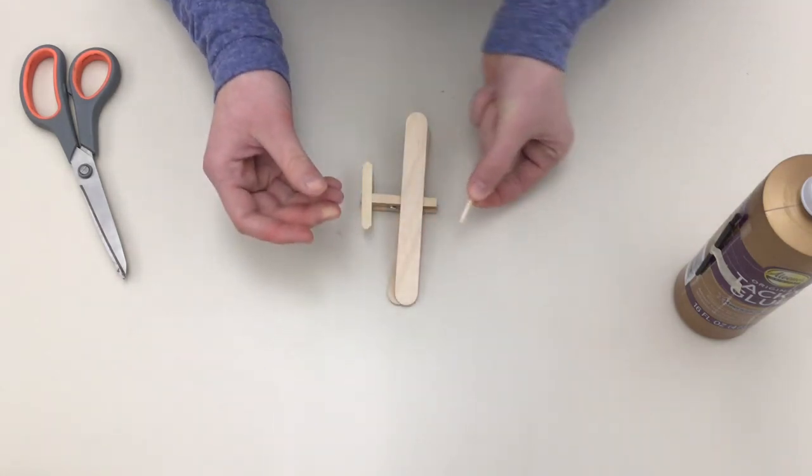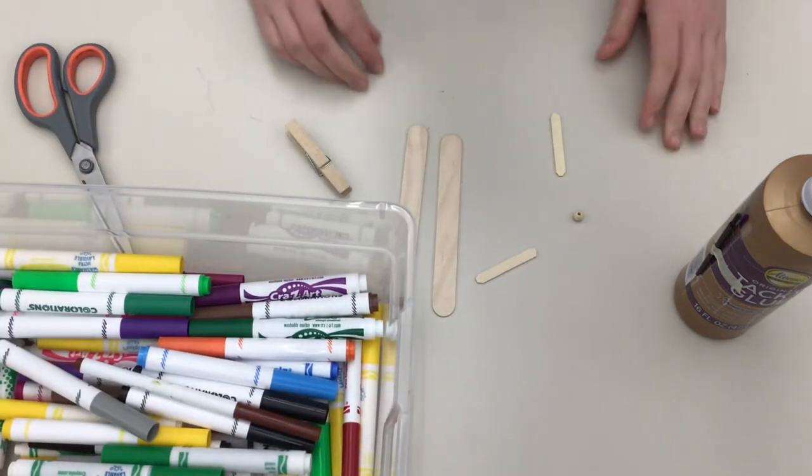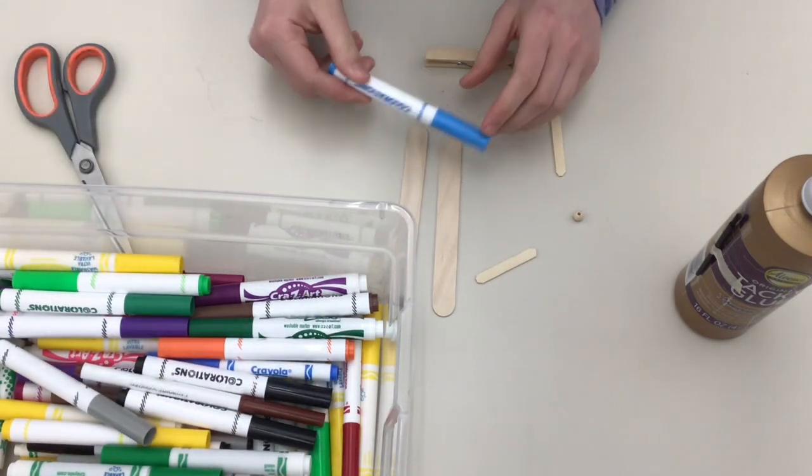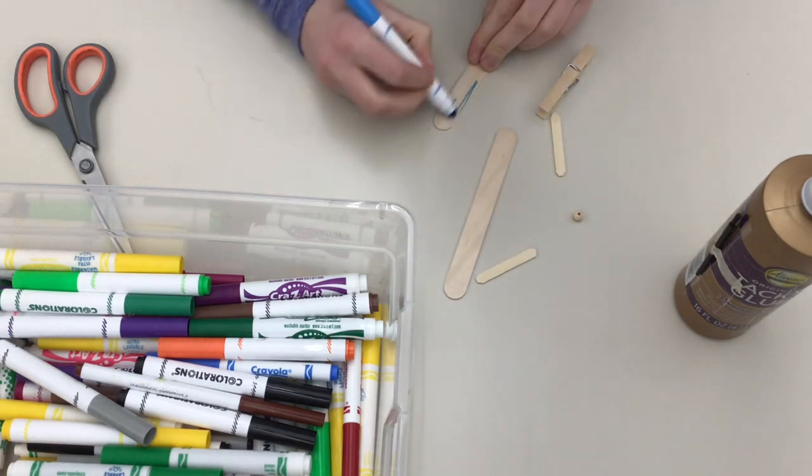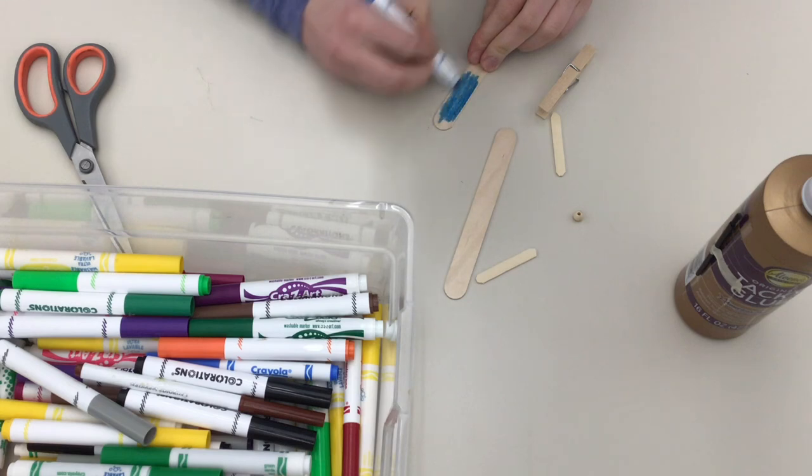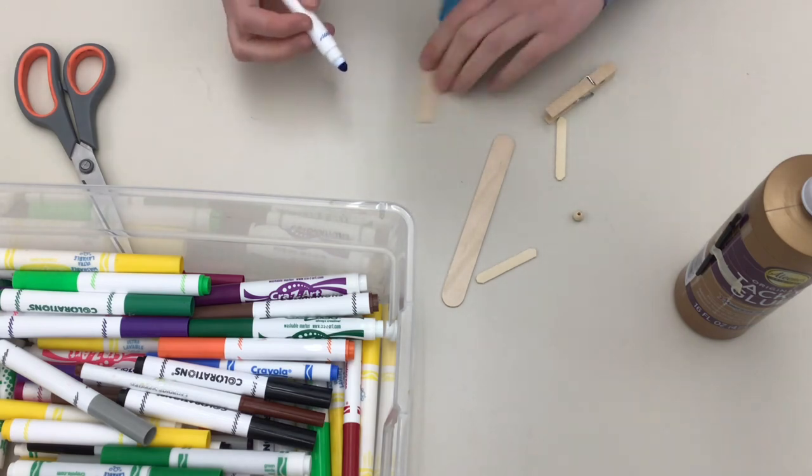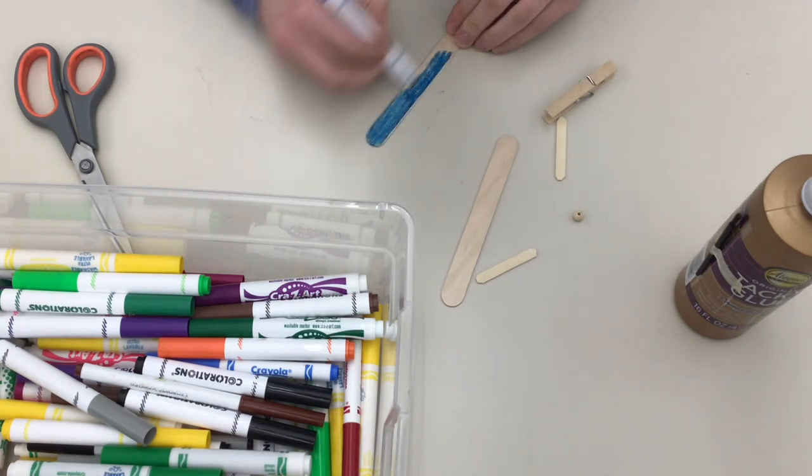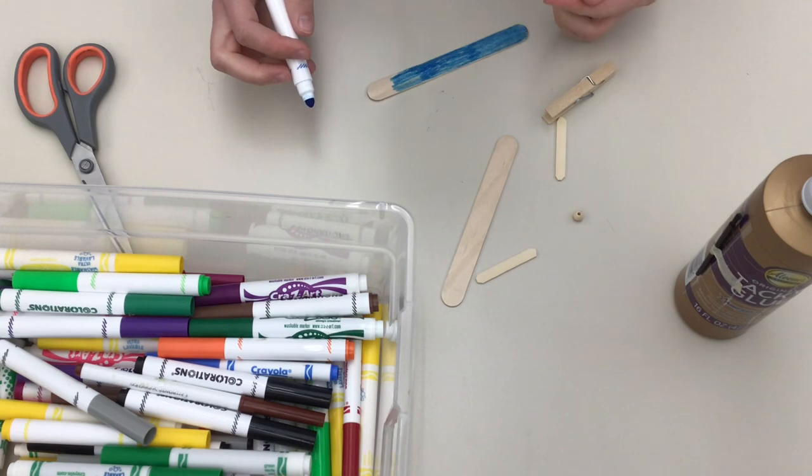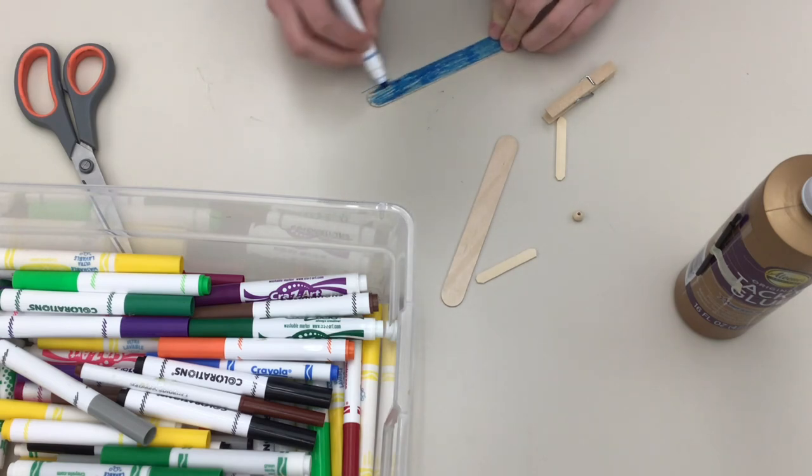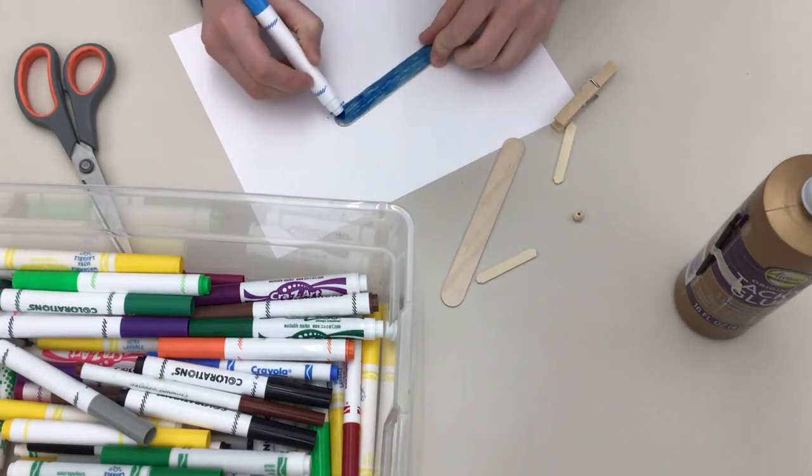Next we're going to color the pieces, so if you want to think about this design while you're coloring, that would be a smart idea. I'm going to color both of my wings blue. And if you keep getting marker all over the table like me, just grab a sheet of paper and put it under your craft sticks.